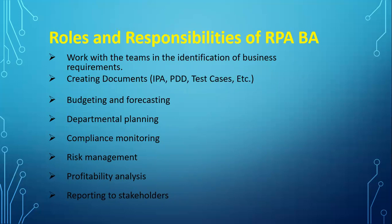After UAT, there is a hypercare stage where the bots run in the production environment. The BA monitors, tracks, and analyzes results, informs the business team, and obtains hypercare sign-off. Following hypercare is the deployment stage, where the solution architect prepares the deployment plan, architecture, and bot licenses. The BA coordinates the setup between the business team and solution team and hands over the bots.